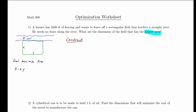Our constraint is the length of fencing available. If we add up the fence lengths based on our dimensions, we have a length x, a length y, and another length x. So our length of fencing is x plus y plus x, and that has to equal 2,400. So we have 2x plus y equals 2,400. We can solve for y by subtracting 2x on both sides, giving y equals 2,400 minus 2x.